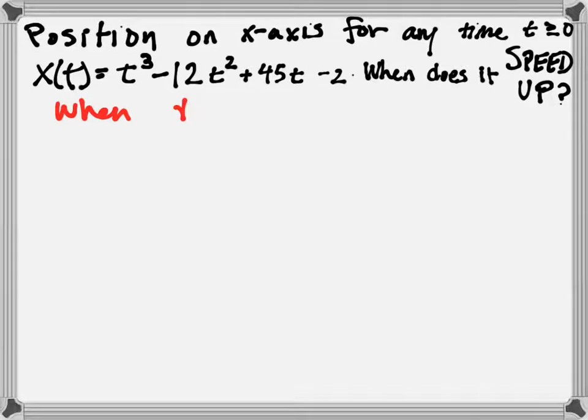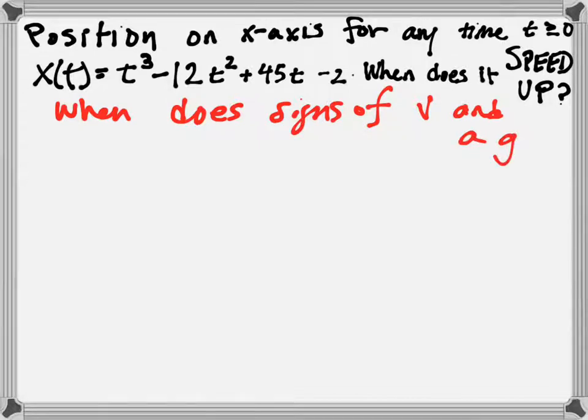When does sine of, or I guess, signs of velocity and acceleration agree or be the same? When do they work together? That means we're going to need the velocity function as well as the acceleration function, and to analyze their signs, we're going to use a sign chart.